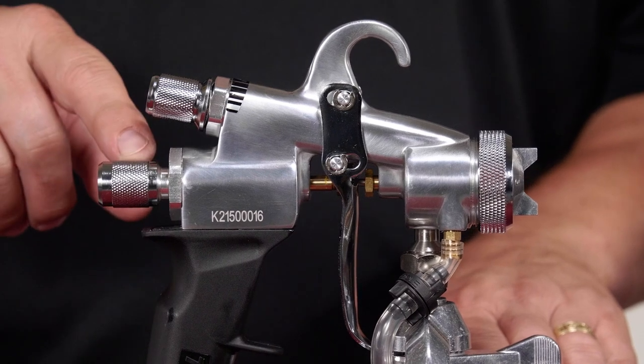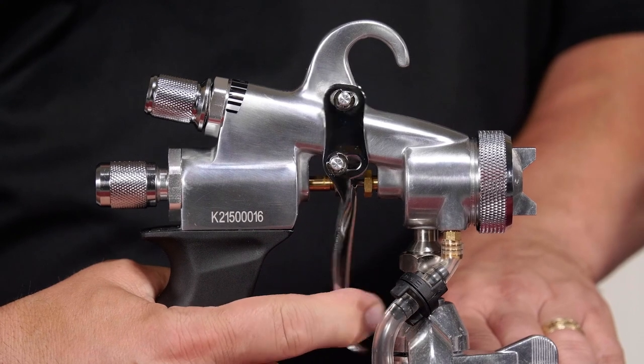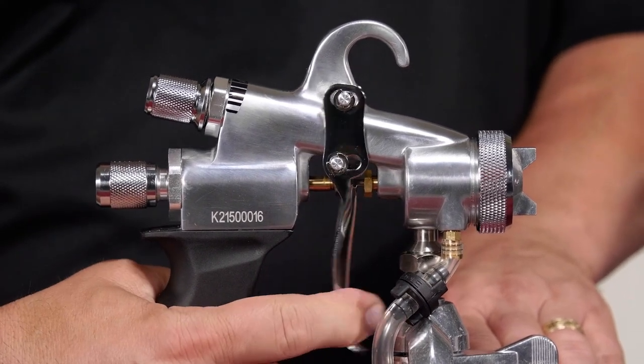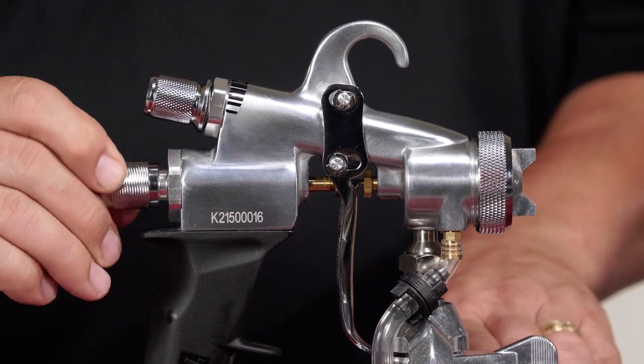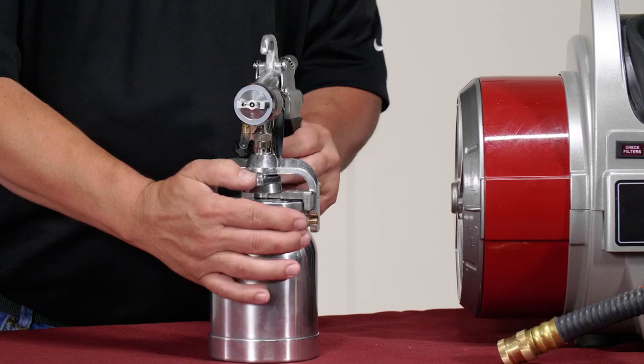The bottom material flow knob controls the amount of paint coming from the needle by stopping the travel of the trigger. Full open is unthreaded far enough to expose one thread on the knob fitting. Turning the knob clockwise will reduce the amount of paint by shortening the trigger pull.